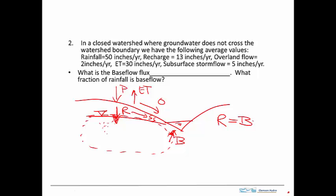We have the recharge coming in equals the base flow going out for the balance on this aquifer. And since we're given the recharge, we can just calculate the base flow directly. Okay, so that's pretty simple. Let's see. Recharge is 13, and so the base flow is 13 inches per year.